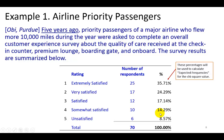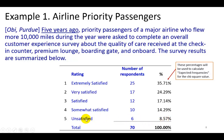We go to this example — you can pause the video and read over it — but this is a customer satisfaction survey of priority customers in an airline, and the ratings range from extremely satisfied to unsatisfied. This is a Likert scale, and 70 customers were surveyed: 35.7% said they are extremely satisfied, and going down the scale, only 8.57% of the passengers said they were unsatisfied.